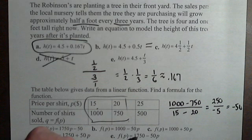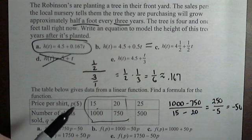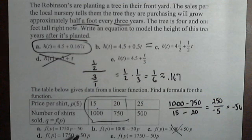So that's my slope. So it's going down by 50 shirts every time we raise the price by one dollar. So we can already eliminate all the ones with a positive 50.